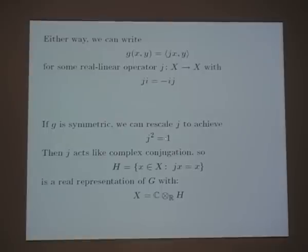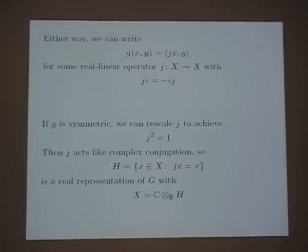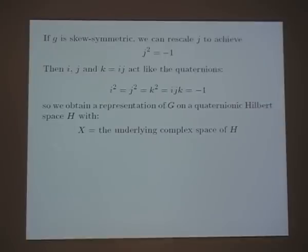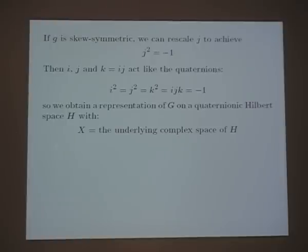An operator J that satisfies J² = 1 and anticommutes with i is like complex conjugation. You can look at the subspace of vectors fixed by J — that's a real subspace which, when you complexify it, gives back your representation. That's the real case. On the other hand, if G is skew-symmetric, you can rescale J to get J² = −1. Combined with i, defining k = ij, you can check the quaternion relations hold. In that case our Hilbert space becomes a quaternionic Hilbert space — we were just neglecting J and k and thinking of it as complex.